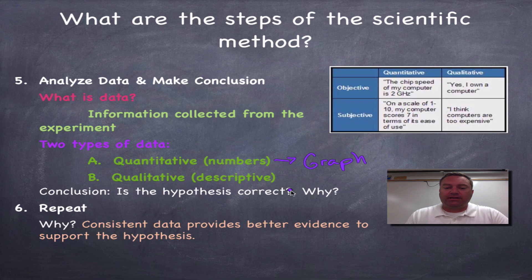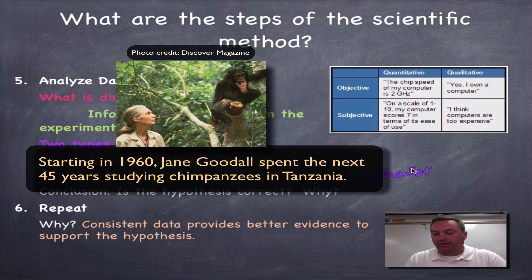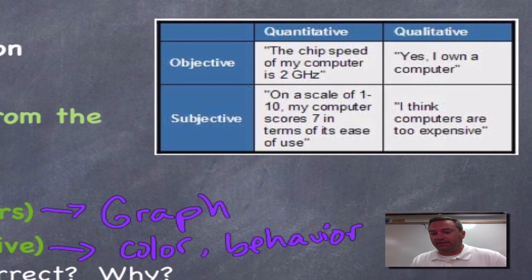Sometimes our experiments cannot create numbers, so we're going to collect qualitative data. This would be descriptive. Qualitative would be like you're describing color, or another one would be a behavior. Like if you're Jane Goodall and you're out in the jungle looking at the chimps and you're describing their behavior, that would be qualitative.